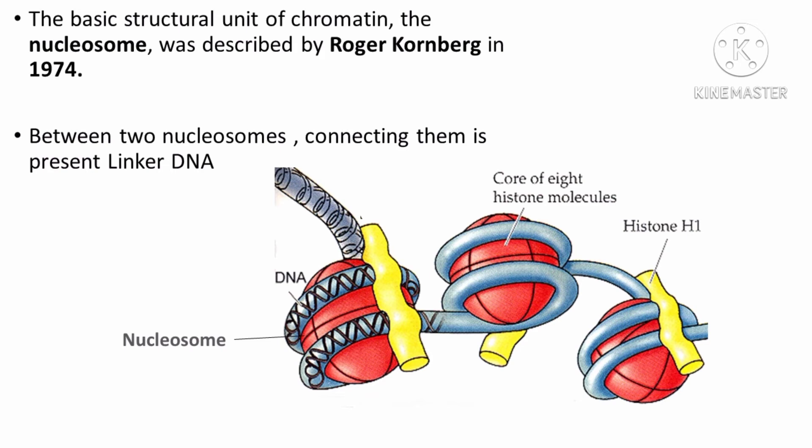The nucleosome was first discovered by Roger Kornberg in 1974. The nucleosomes are linked with each other by means of DNA called linker DNA. It remains coiled or folded but can be stretched by pulling. When the chromatin of nuclei is digested with endonuclease, the DNA breaks into fragments of about 200 base pairs. It can be said that a typical nucleosome contains 200 base pairs of DNA helix.